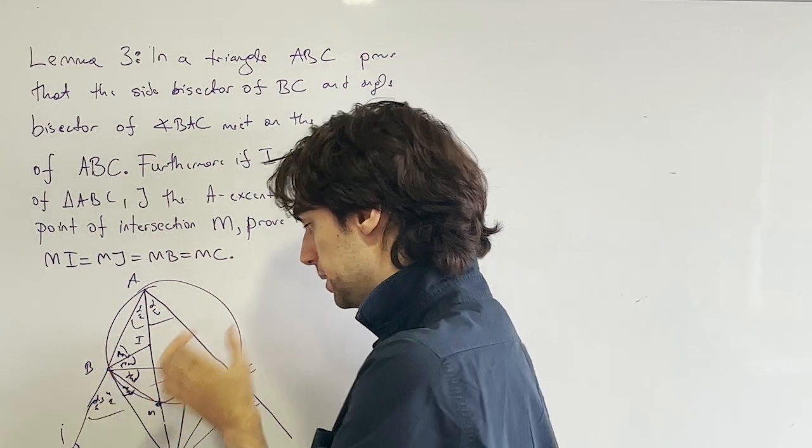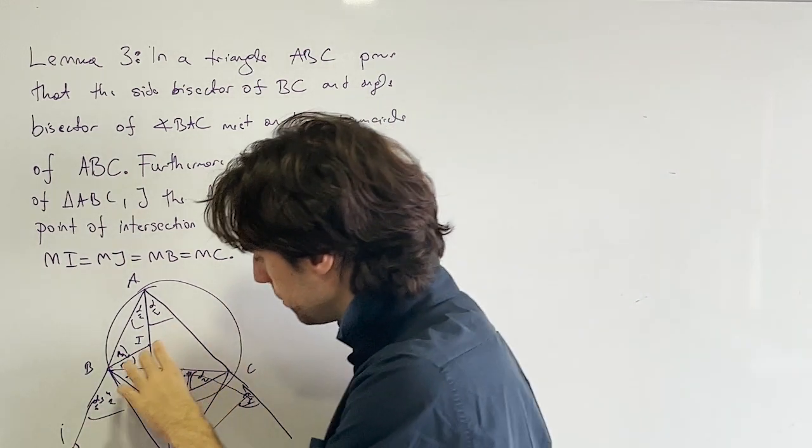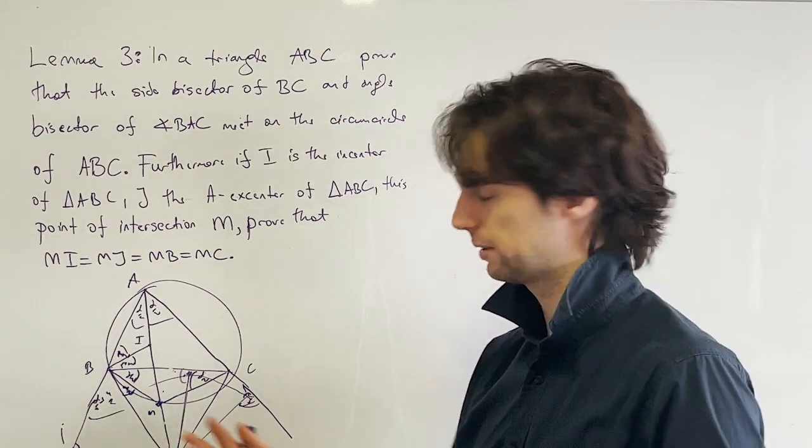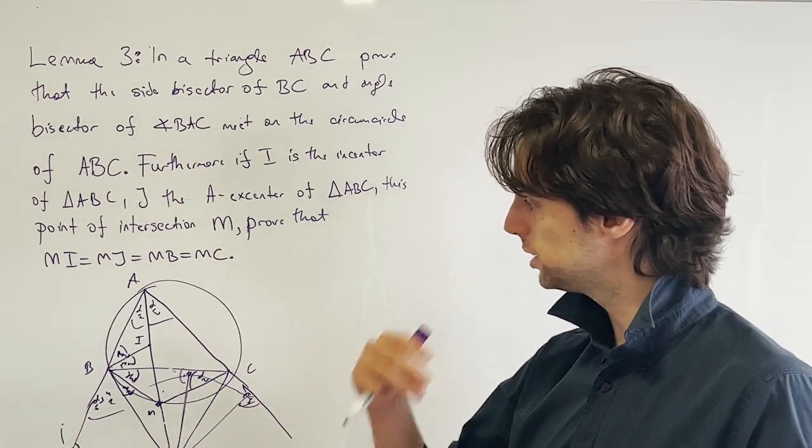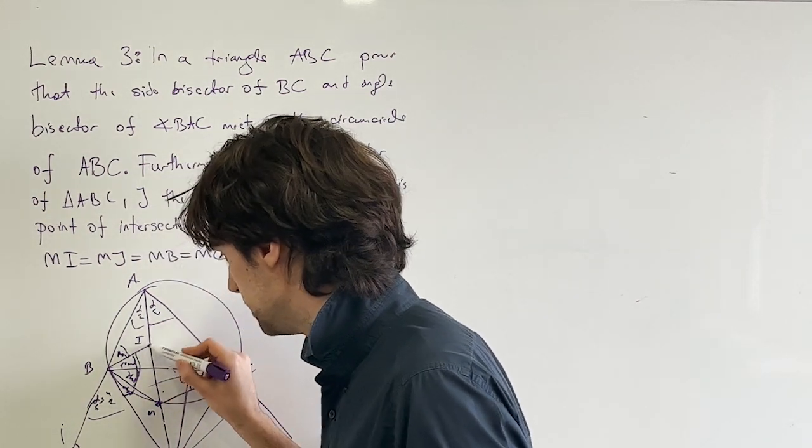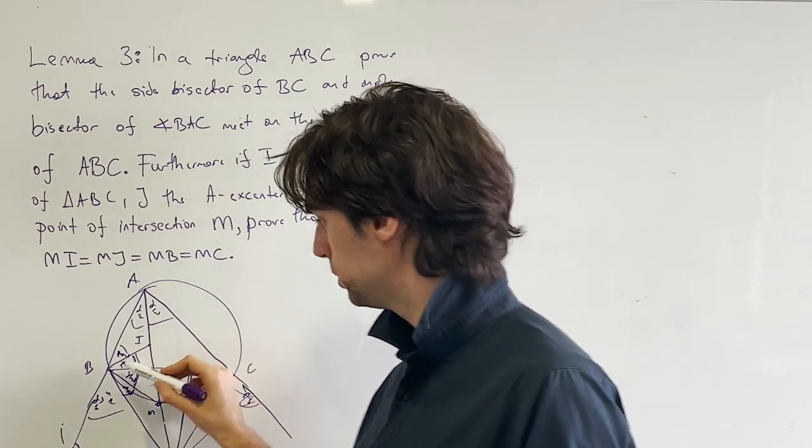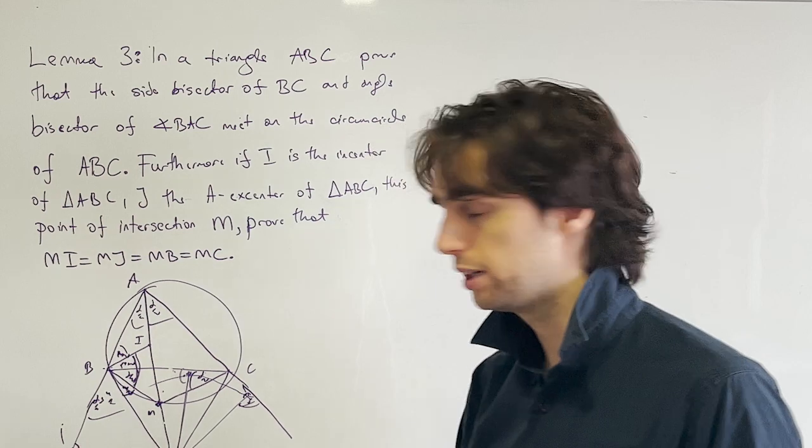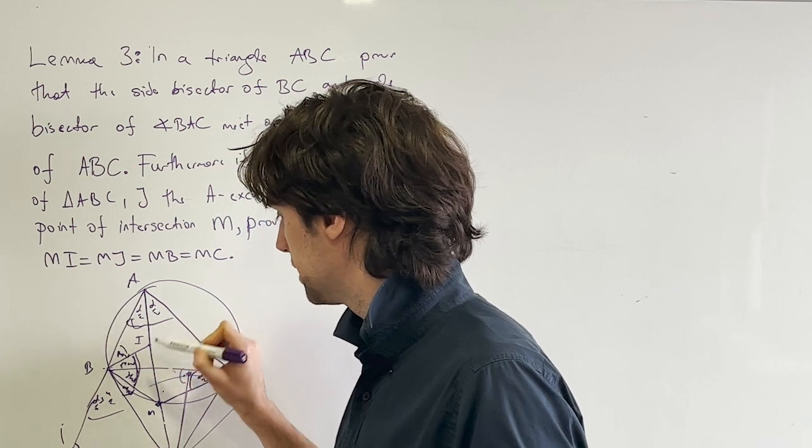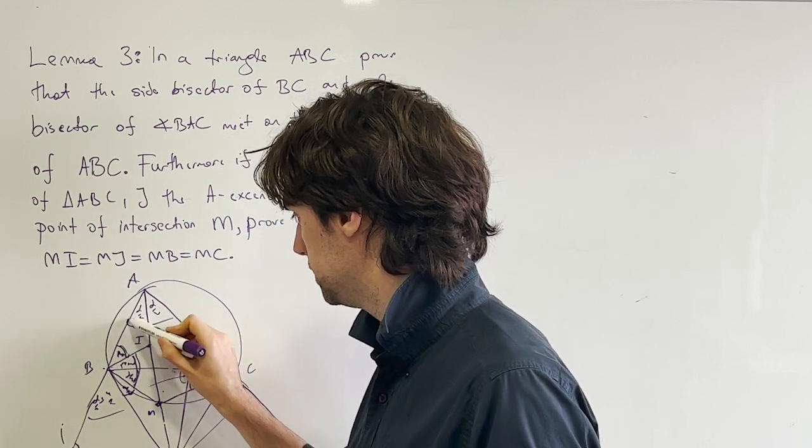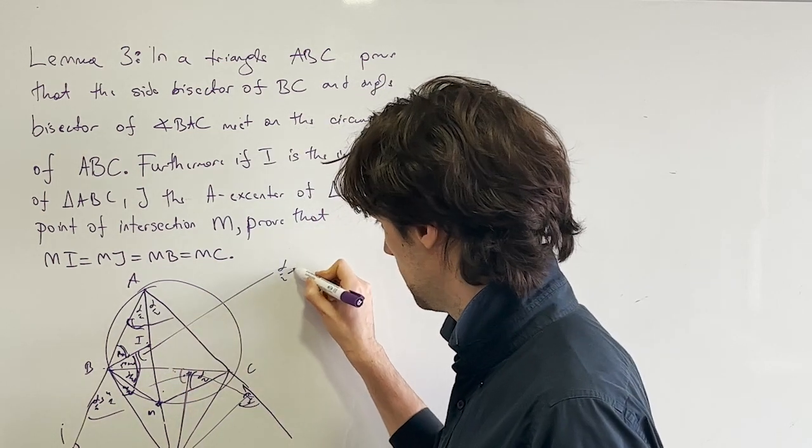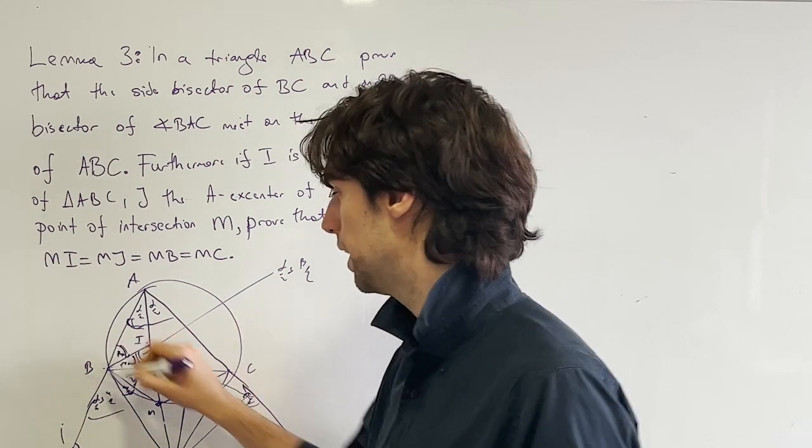So we already have that MB equals MC, right? So how can we prove that MI equals MB? I invite you to pause for two to three minutes and try to figure that out. And the answer is, we do some angle chasing. So what is the angle here? We have beta half plus alpha half, right, the IBM angle. And then we need BIM to also be beta half plus alpha half. But we already have that because it's the angle that's the sum of these two, IBA and IAB. Their sum is this and this is alpha half plus beta half, i.e. MI equals MB.